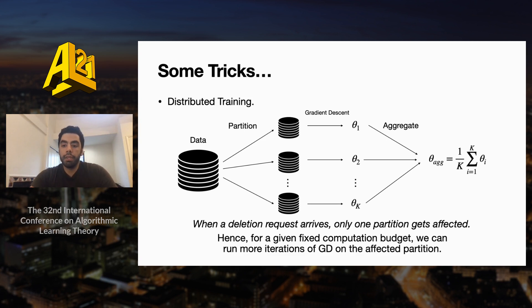So for a given fixed computation budget, which is the number of gradient computations in our case, we can run more iterations of gradient descent on the affected partition, because now the number of data points in the affected partition is smaller by a factor of K compared to the original dataset. And this will help us get fast deletion algorithms, at least in some regimes.